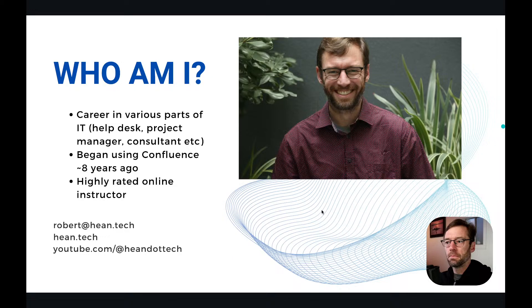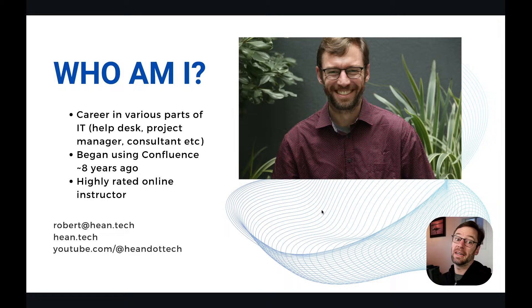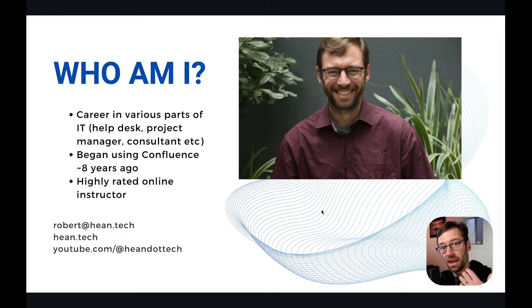We're going to start with a quick slide deck and then jump into some hands-on stuff. But first, who am I? My name is Robert Heen. I've had a career all over IT — help desk, tech support, project manager, traveling consultant, systems manager, network engineering. I've been using knowledge bases for many years, mainly Confluence in the past eight years. I really like working with folks to bridge the gap between knowledge of how a process works and the mechanical tools of systems like Confluence.